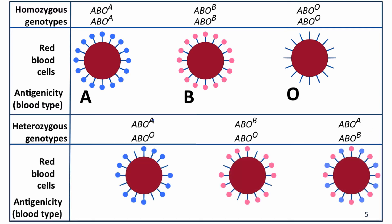The AO heterozygote produces less of the A sugar on its red blood cells because it only has one functional copy of A, but that's still enough for the blood type to be type A. Similarly, individuals heterozygous for the B allele and the O allele make less of the B sugar on their blood cells, but it's enough that they're blood type B. Individuals heterozygous for an A allele and a B allele do something different — they put both A sugars and B sugars on their blood cells. Their blood reacts to antibodies for both A and B, so they have blood type AB.